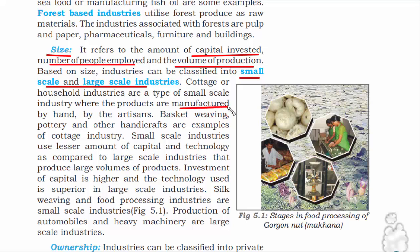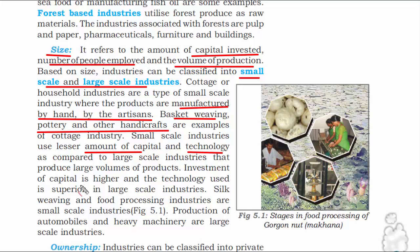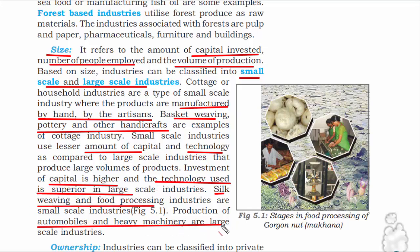Small-scale industries are ones where people manufacture things by hand. Examples include basket weaving, pottery, and other handicrafts — the capital is comparatively less and technology is not advanced. On the other hand, large-scale industries are exactly opposite: capital is huge and technology is advanced. Examples include production of automobiles and heavy machinery.